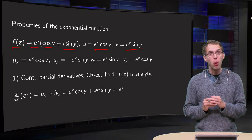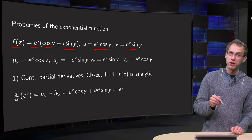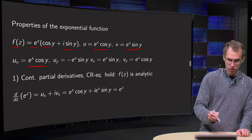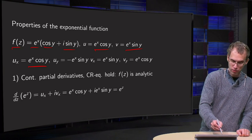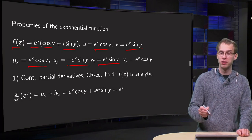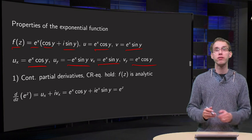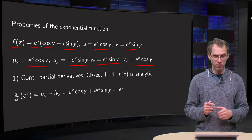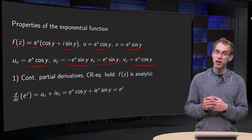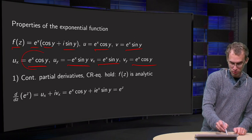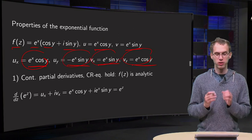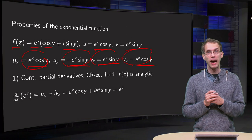Whether all those familiar rules still hold. We can first check whether f is analytic. We compute: u_x = e^x cos y, u_y = -e^x sin y, v_x = e^x sin y, v_y = e^x cos y. The partial derivatives are continuous functions of x and y, and the Cauchy-Riemann equations hold because u_x equals v_y, and u_y equals minus v_x. So our function f of z is analytic.